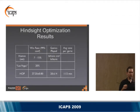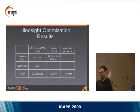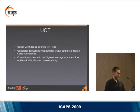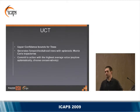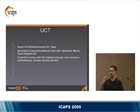Our initial results for hindsight optimization were very promising — far surpassing our Las Vegas standard and human estimation. I was incredibly pleased and poured tons of jobs onto our compute cluster to drive down the error bars. We then coded up UCT as a comparison. UCT generates forward-lookahead trees optimistically by running Monte Carlo trajectories, building a tree and ultimately taking the action with the highest average value.